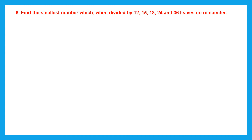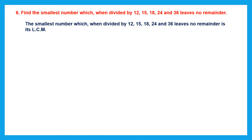Question 6: Find the smallest number which when divided by 12, 15, 18, 24 and 36 leaves no remainder. When we are asked to find the smallest number, we are talking about the LCM. When we ask for the greatest number, we are talking about the HCF. So here we have to find the LCM of 12, 15, 18, 24 and 36. Let's begin.